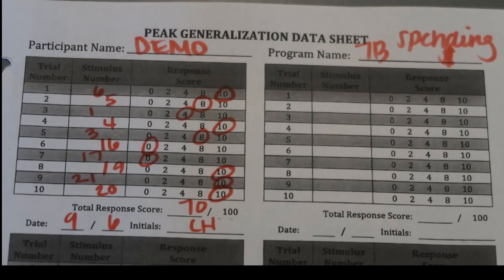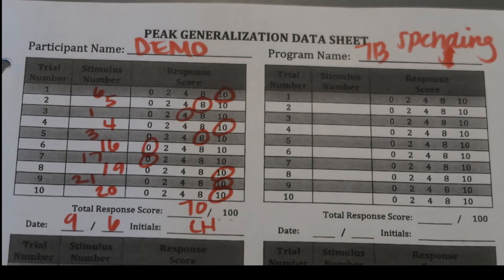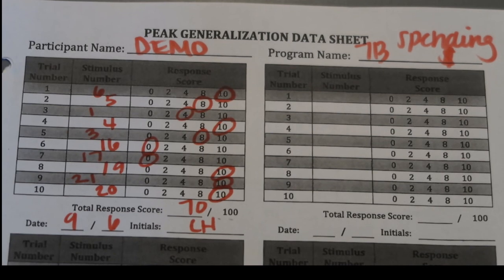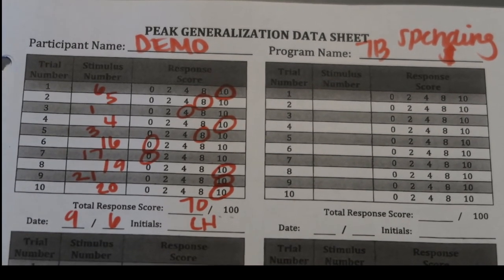Go ahead and check your scores for Peak generalization, spending money 7b.